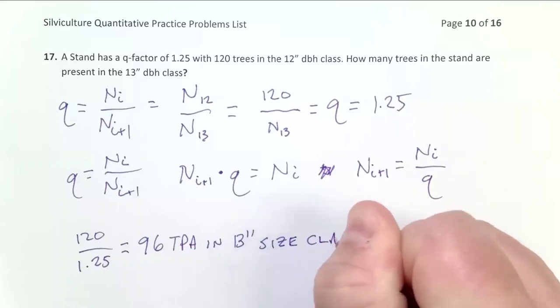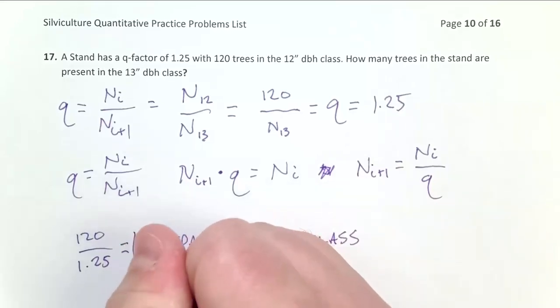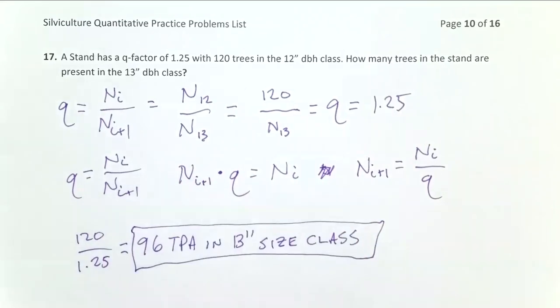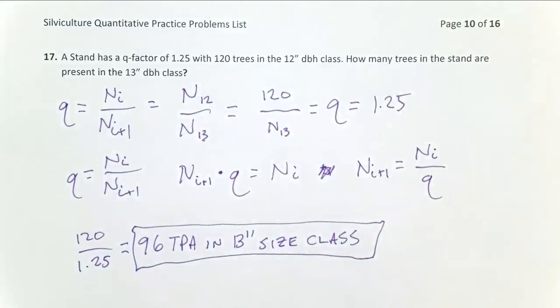That's my answer. With a stand characterized by a Q factor, a stand that has a reverse J-shaped distribution, you always have more small trees than big trees, so I can check that pretty straightforward.